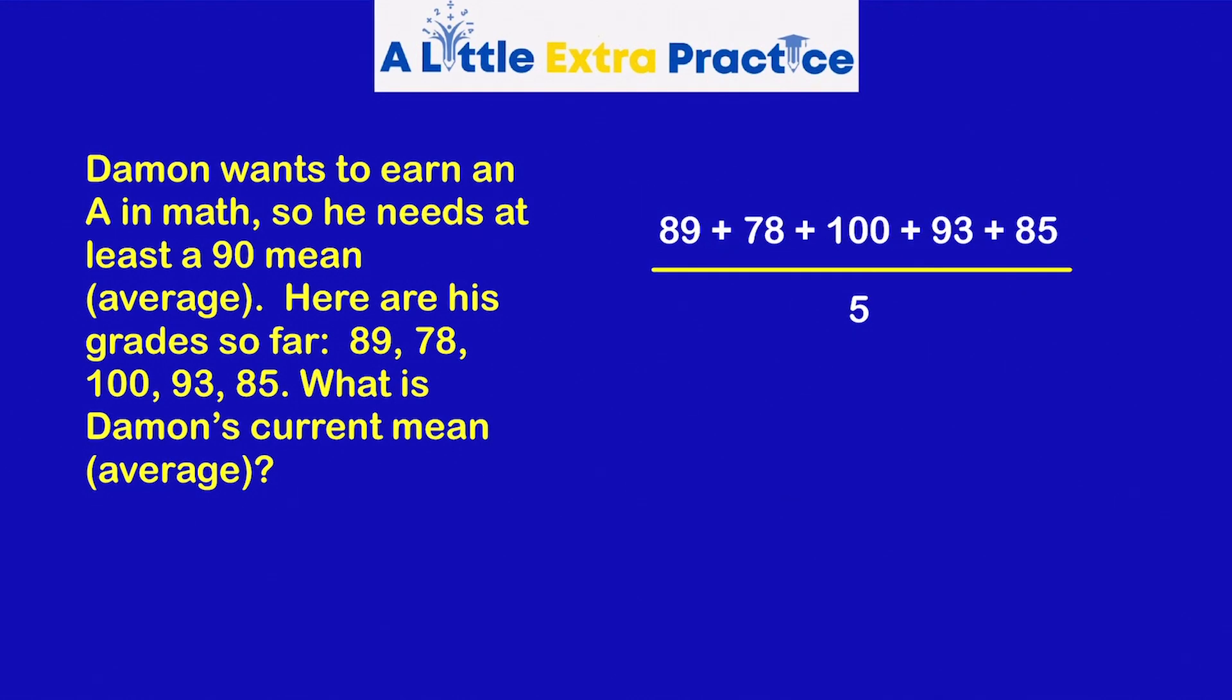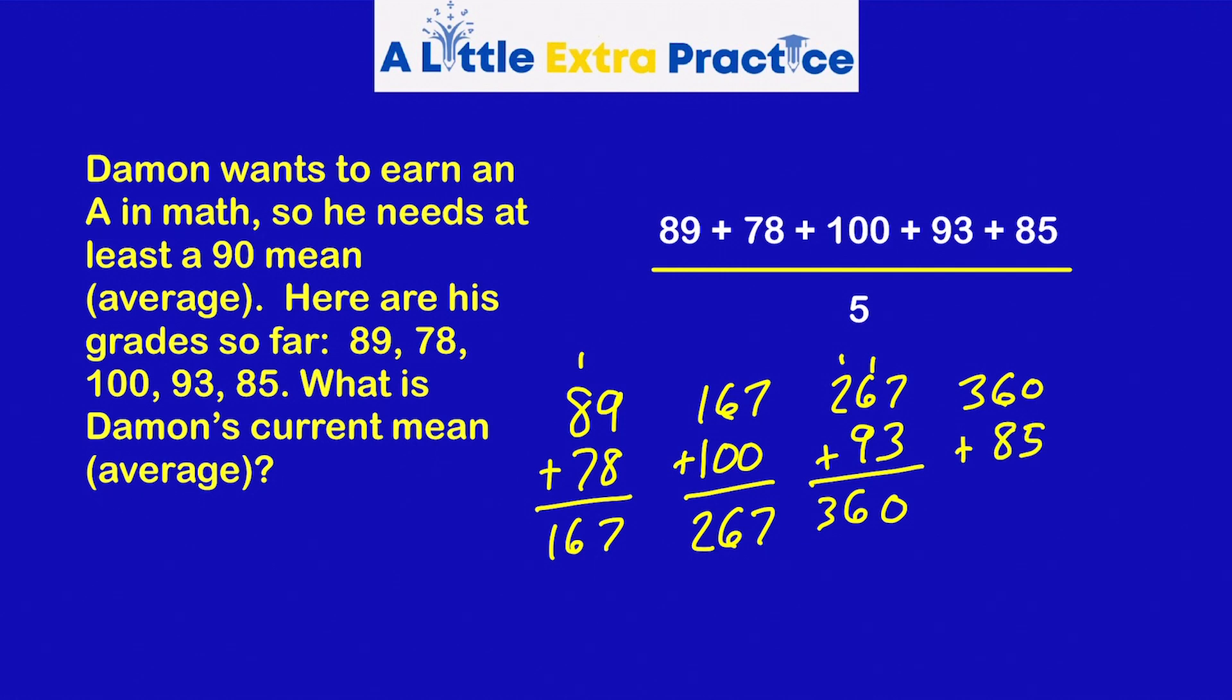Let's take a look at the first one. We have five numbers, so we're going to add those and divide by five. The sum of the digits is 445. Next step, divide by five.